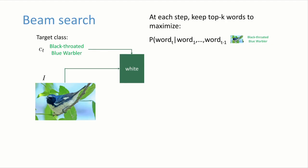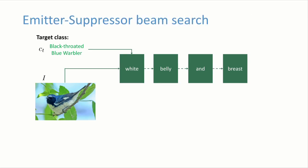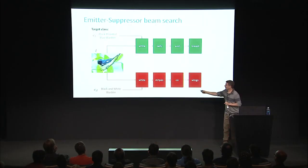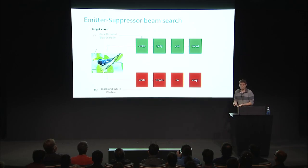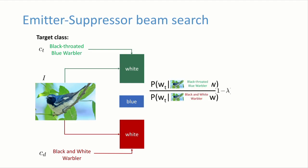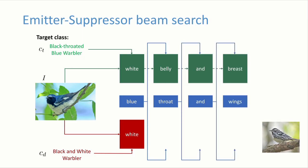You create word after word — showing just the top one here — and you would get something like 'white belly and breast' for that image. In our case, we also have a distractor class with its own separate RNN. The question is how to combine the target sentence with the distractor sentence. The approach is actually very simple: again we do it iteratively, keeping top K options, but at every step we take the top K options for our objective function that balances generative and discriminative. You keep treating as history the sentence just generated, and you get something like 'blue throat and wings' with this distractor class.